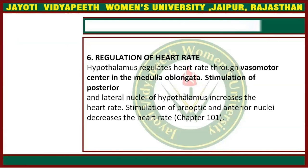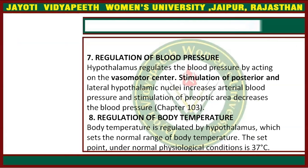Regulation of heart rate: the hypothalamus regulates heart rate through the vasomotor center in the medulla oblongata. Stimulation of the posterior and lateral nuclei increases the heart rate, while stimulation of the pre-optic and anterior nuclei decreases it. Regulation of blood pressure: the hypothalamus regulates blood pressure by acting on the vasomotor center. Stimulation of posterior and lateral hypothalamic nuclei increases arterial blood pressure, while stimulation of the pre-optic area decreases blood pressure.